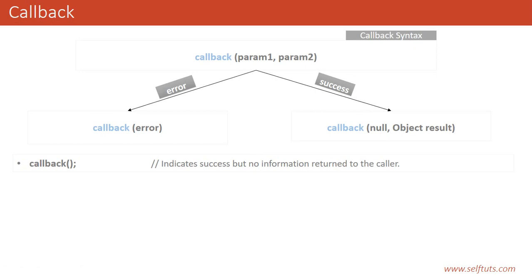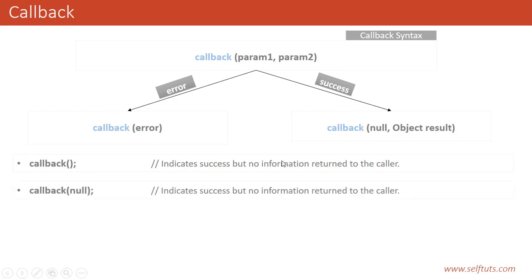If we call the callback function without any parameter, it indicates success but no information is returned to the caller — both parameters are empty. Similarly, if you call the callback function with only the first parameter as null, it also indicates success but no information will be returned to the caller.